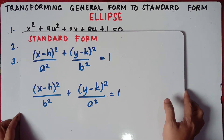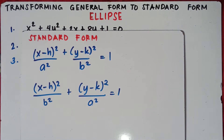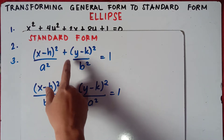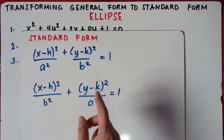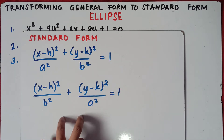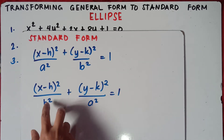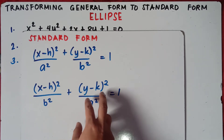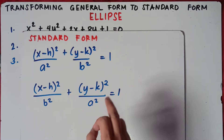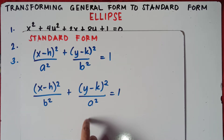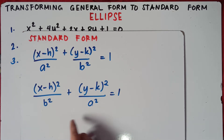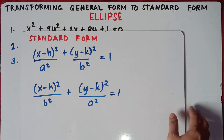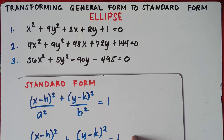This is the standard form of an ellipse: quantity x minus h squared over a squared, plus quantity y minus k squared over b squared, equals 1. Or you can have the equation with b squared under x and a squared under y. Your A is always the principal axis or the major axis. We transform the general form into this standard form.